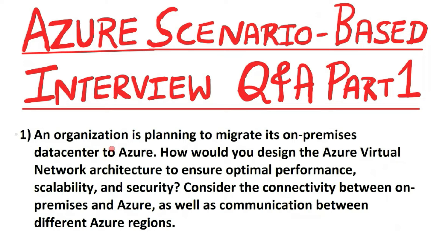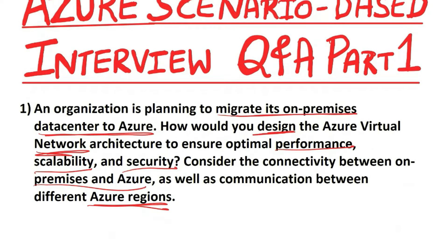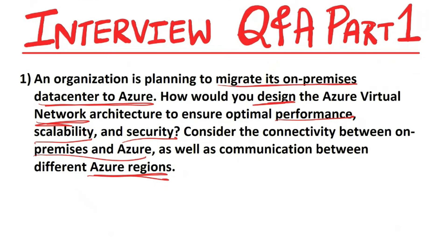First question: an organization is planning to migrate its on-premises data center to Azure. How would you design the Azure virtual network architecture to ensure optimal performance, scalability, and security? Consider the connectivity between on-premises and Azure, as well as communication between different Azure regions. Designing the Azure virtual network architecture involves careful planning and consideration of various components. Let's see some of the key steps and considerations.